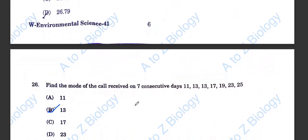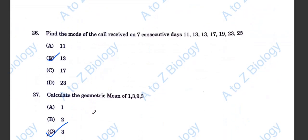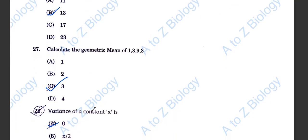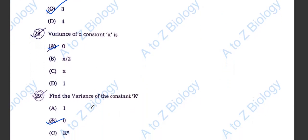Question number 26. Find the mode of the call received on 7 consecutive days and its answer is 13. The geometric mean of 1, 3, 9, 3 is 3. The variance of a constant X is 0, and the variance of the constant K is also 0.